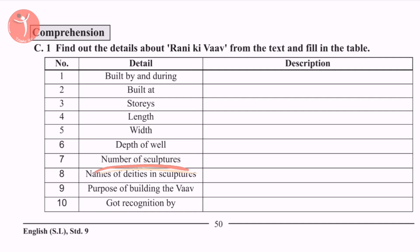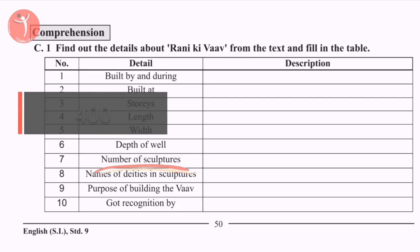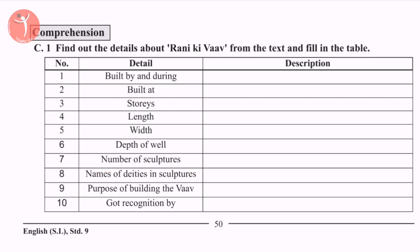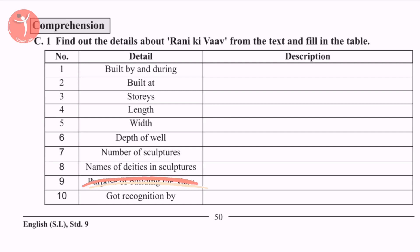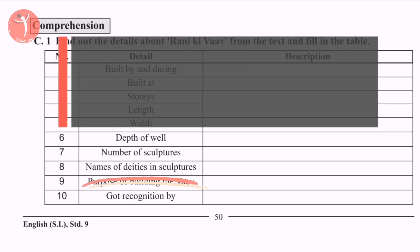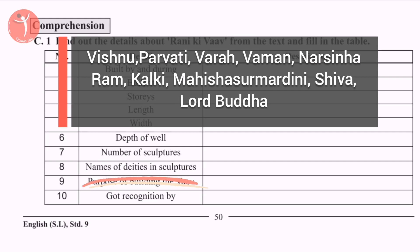Number 7, Number of Sculptures: there are around 400 sculptures. Number 8, Names of Deities in Sculptures: in many places there are 10 deities — Vishnu, Parvati, Vra, Vamant, Narshin, Ram, Kalki, Mahisa, Sur, and Lord Buddha.